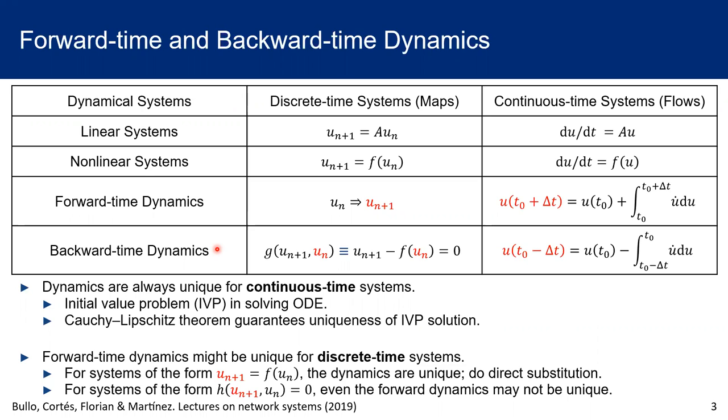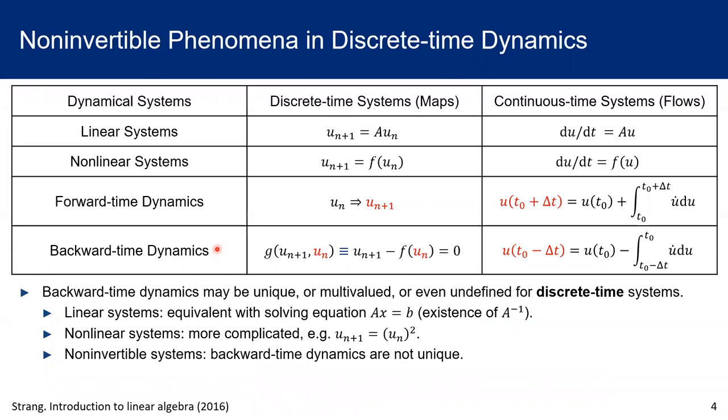These numerical integrators are considered as discrete time dynamics. For these explicit integrators, their forward time dynamics are good. But for implicit integrators, even forward time dynamics might not be unique. As we mentioned before, if these dynamics are multivalued or even undefined, we call these systems non-invertible systems.